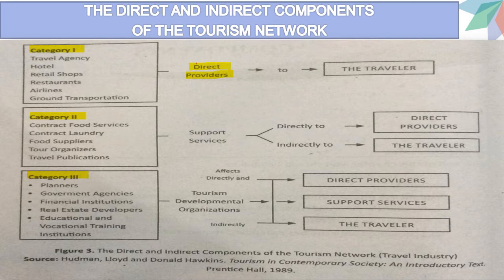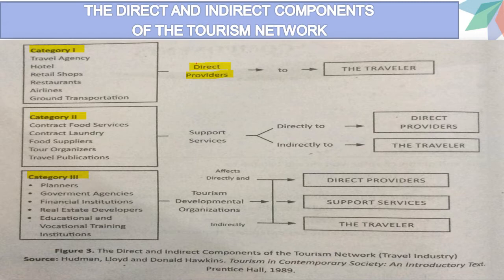For example, if you want to book a tour package, you can go directly to a travel agency and they will provide directly what the tourist needs. Same with a hotel — if you want to book a guest room, you can go directly to the hotel, or visit their website and interact with them right away. That is why they are called direct providers to travelers or tourists.